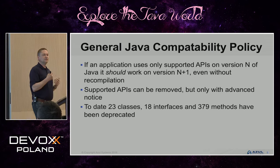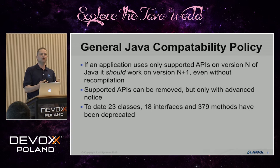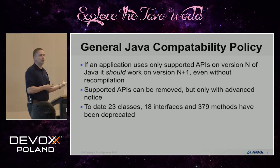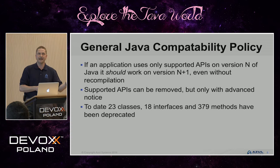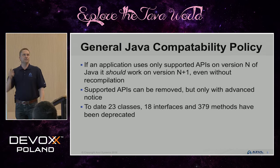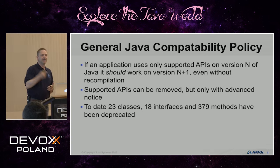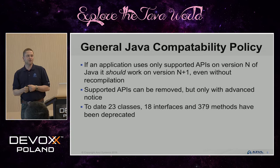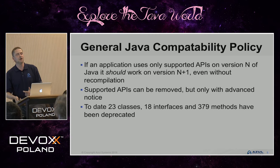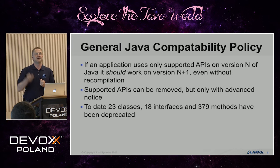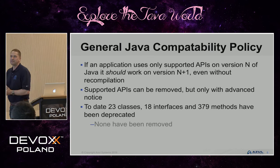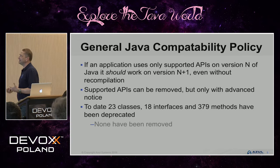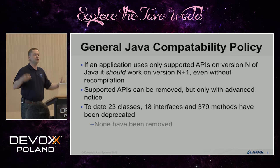The developers of Java have always said they reserve the right to remove publicly supported APIs, but they will give you advance notice. From JDK 1.1 onwards there is the deprecated tag — now the deprecated annotation — which allows you to see that things could potentially be removed in the future. In JDK 8 there are 23 deprecated classes, 18 interfaces, and 379 methods. Of those, how many have actually been removed? None. Absolutely zero.